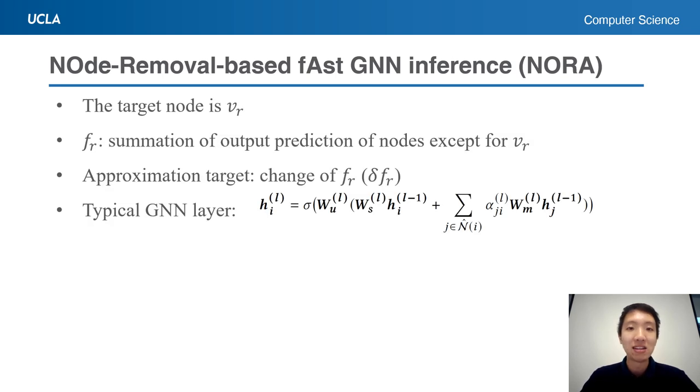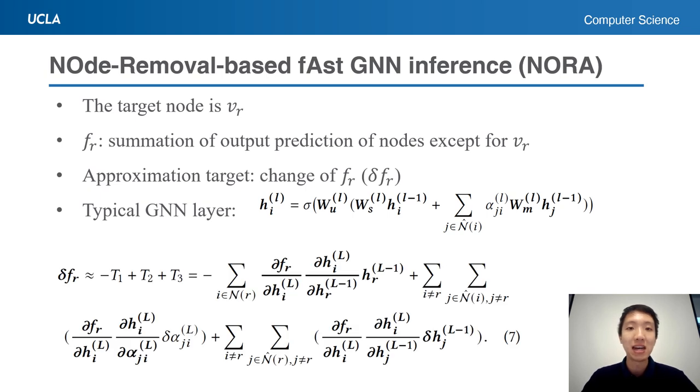Assume we are analyzing the influence of node R. We define FR as the summation of the output predictions of all the nodes except for node R. Then, we want to approximate the change of FR due to removing node R. Considering a typical GNN layer, we can approximate the change of FR in this formula by the first-order derivatives.